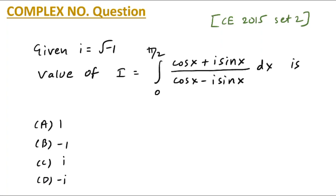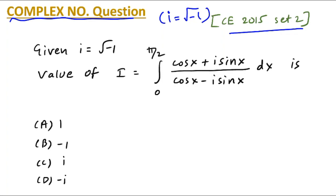Up till now we have seen questions on definite integrals and indefinite integrals, dealing with concepts like convergence and divergence, substitution technique, and tricky questions. Moving forward to the complex number questions — complex number means iota. You should remember i equals root(minus 1). This question was asked in Civil Engineering 2015 Set 2 gate paper: given i equals root(minus 1), the value of I equals integral from 0 to π/2 of (cos x plus i sine x) upon (cos x minus i sine x) dx is what?